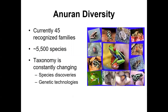From our first lecture on extant amphibian taxonomy, we covered salamanders — about 10 families and just over 400 species, not a very diverse group. If you think about where all amphibian diversity resides, it is with the anurans. Currently there are 45 recognized families, possibly over 50 as some are being split, and anywhere from 5,500 to 6,000 known species — a tremendous amount of diversity with our frogs and toads.